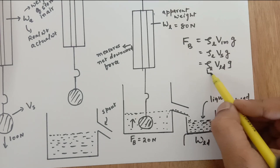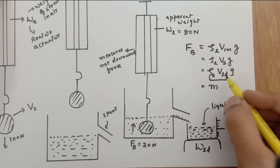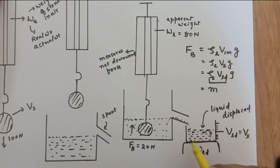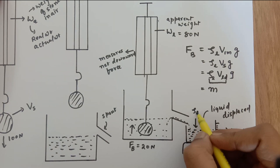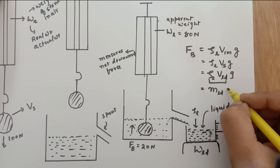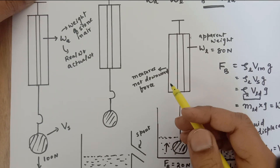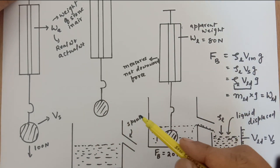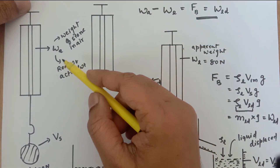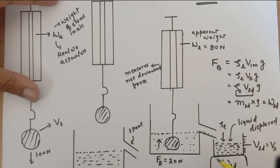The product of density times volume is mass — this is the mass of the water displaced, because volume displaced multiplied by the density of the liquid gives the mass of liquid displaced. Multiplying by g gives the weight of the liquid displaced. So Archimedes' principle states that when a body is completely or partially immersed in a liquid, upthrust acts on it, and that upthrust equals weight in air minus the apparent weight in liquid, which also equals the weight of liquid displaced.